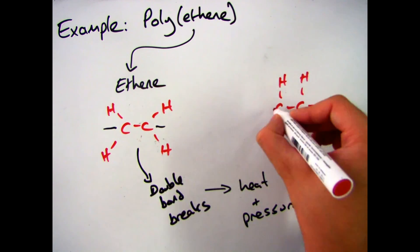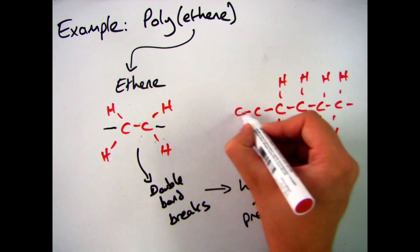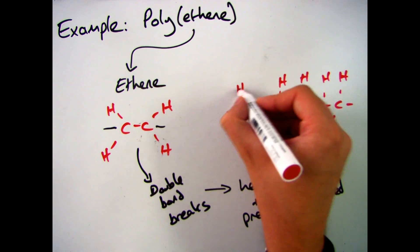So what I'm drawing here is a three section chain of a polyethene molecule. So I've got three lots of the same ethene molecule repeating just like that.